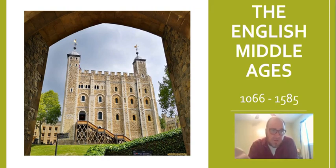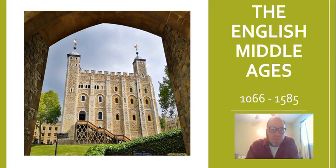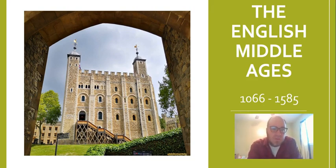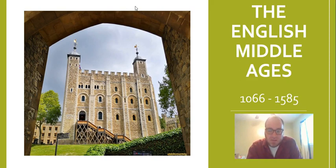He had guys survey all of the holdings in England and take down all these records and information on them — sort of like a tax record so he could have an effective tax system. This picture you see here is the Tower of London, which was actually built by William the Conqueror. It was like the biggest keep in the land. It would have been whitewashed at the time — it was called the White Tower — and it would have been the most imposing structure in the land.